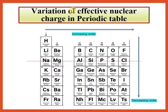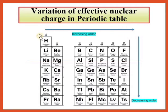Application: Variation of effective nuclear charge in the periodic table. Going from left to right, Z_eff increases, which is why atomic size decreases. Going from top to bottom, the screening effect increases because the number of shells increases, so the size increases.